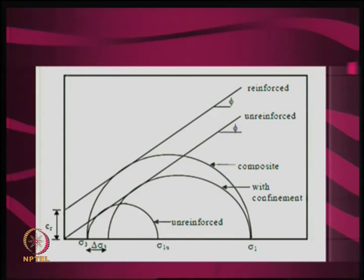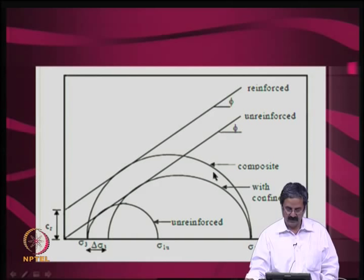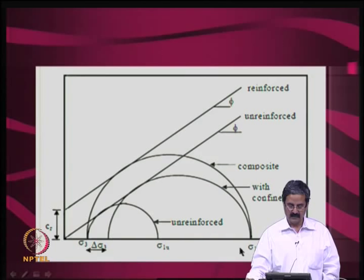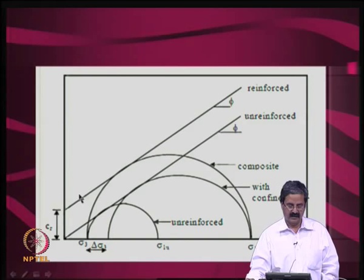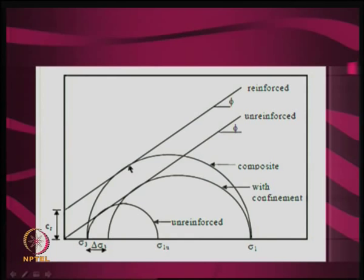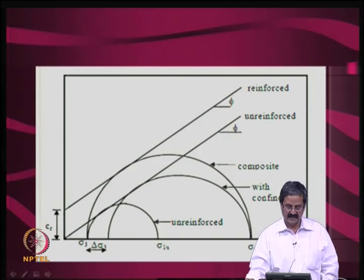For the same σ₃, you now have a higher σ₁ with reinforcement. You can draw a tangent to the two circles — the unreinforced and reinforced — and this extra confining pressure manifests as cohesion C. So for the same normal stress, the reinforced system can carry more shear. We are trying to represent the effect of reinforcement through this equivalent cohesion.